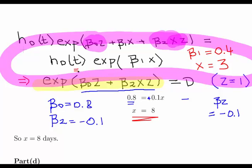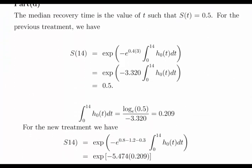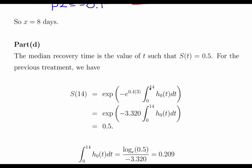What we're going to do is calculate the survival function for some time period T, which is the exponent of the negative of the integral of that hazard. So we integrate the hazard, put a minus sign in front of it, and take the exponent — that gives us our survival function. We take the constant terms outside the integral, so what remains inside is just a function of T. We're looking at 14 days — the median time period for a cow on the previous treatment who starts three days after detection of illness. The median recovery period is 14 days, so 50% would have recovered within 14 days.